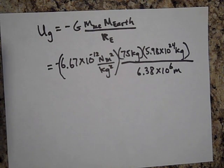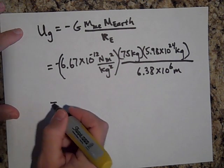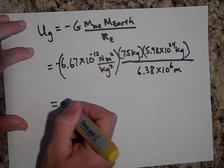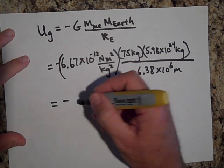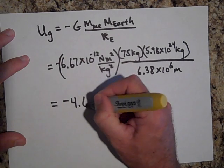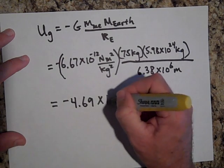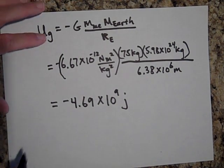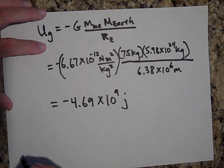When you plug in all that, what you're going to get in your calculator is the following. You're going to get a negative, that I have a negative 4.69 times 10 to the 9th joules. That's about 5 billion joules of negative potential energy.